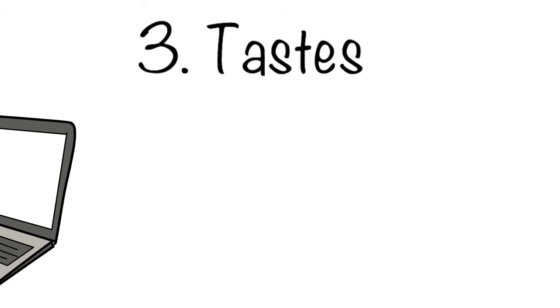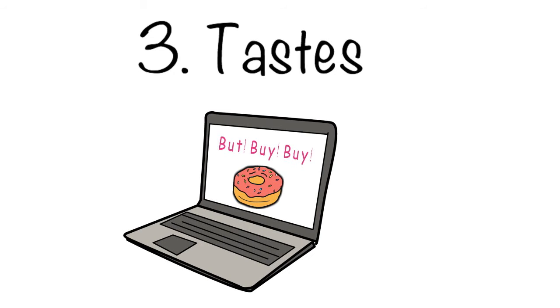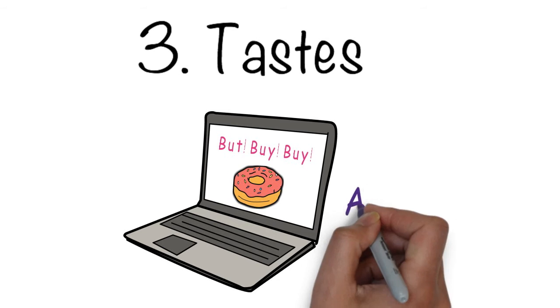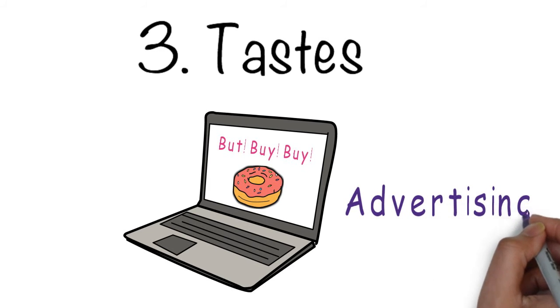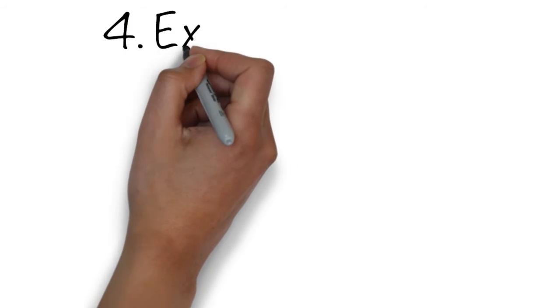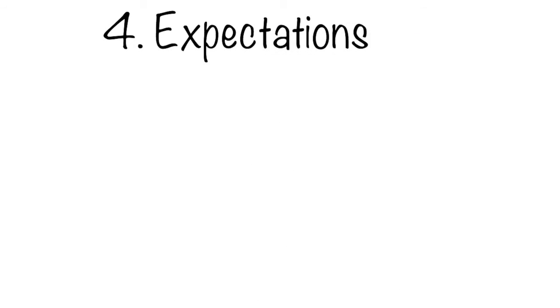Factor number three relates to the tastes of a customer, and these tastes are impacted by things such as advertising. In our example, the more advertising there is for donuts — whether Facebook ads or traditional TV ads — the more it can change your tastes. More advertising tends to lead to higher demand for that product, so a shift rightwards of our demand curve for donuts.